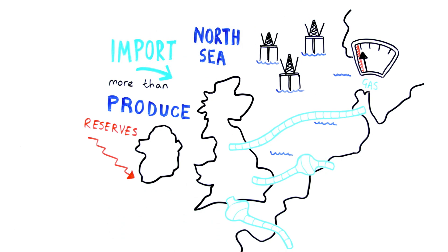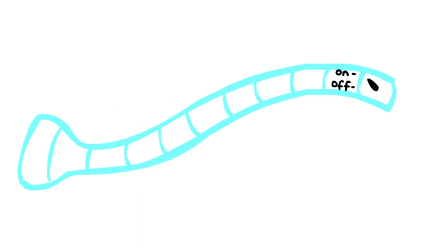When we import it from mainland Europe, for example, gas can be transported through a vast network of pipelines that run across the continent. Unfortunately, these pipes can be turned off, something that's actually happened in the past.